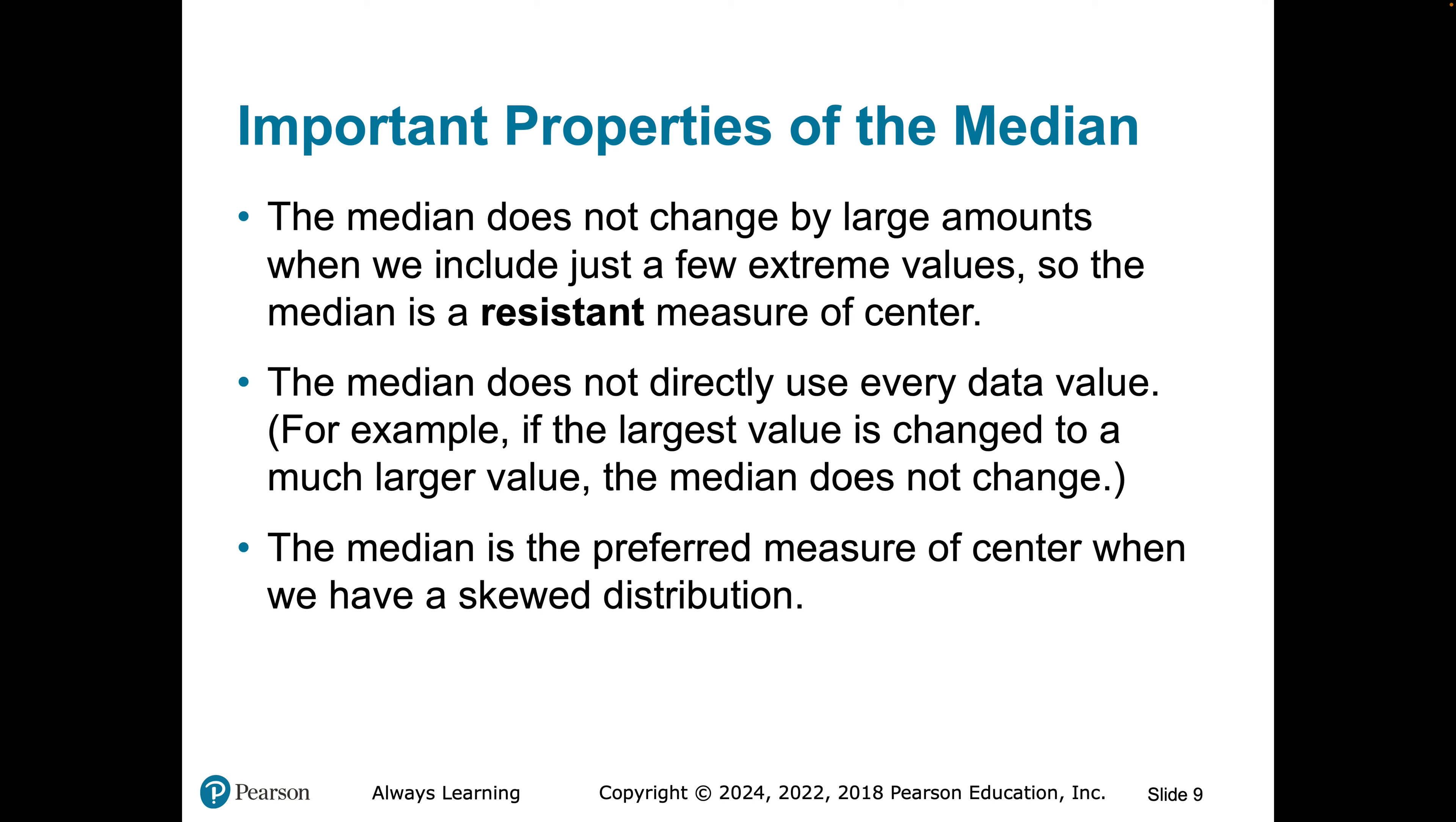Important properties of the median. The median does not change by large amounts. So if we have an extreme value, and I'll demonstrate this in a data set here in just a second. The median is resistant to outliers. And the median does not use every single value. It just arranges the data from low to high. We can change the highest value to whatever we want. It doesn't change the value of the median at all because the median is actually a location and not a cumulative measure, so to speak.